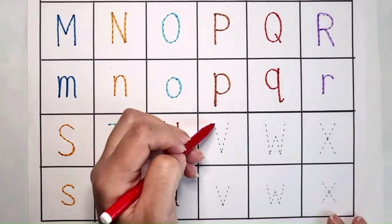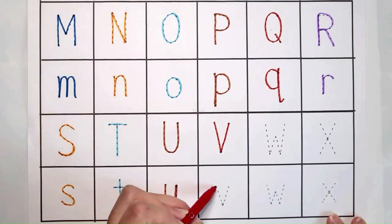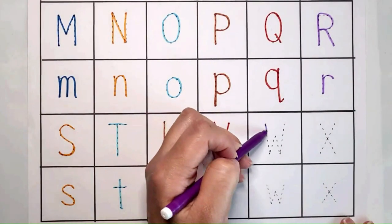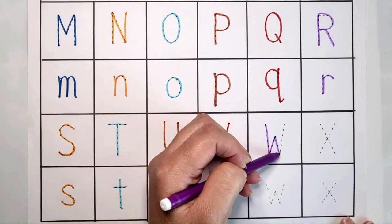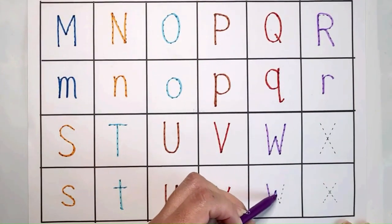V. V is for Van, V Van V. W. W is for Watermelon, W W, Watermelon W.